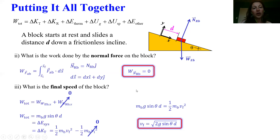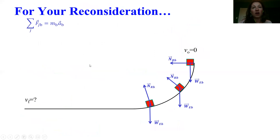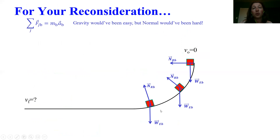We know how to calculate work and changes in translational kinetic energy, but let's talk about why we're doing this. Why introduce this new method when Newton's second law seemed to work for most situations? Let's go back to the situation where the normal force kept changing direction and Newton's second law was going to be really difficult. Gravity would have been easy, but the normal force would have been very hard. Let's see what happens if we use the work-energy theorem — making our system the block, and the total work done on the block equals the change in energy.